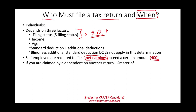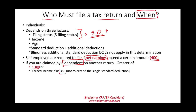What happens if you are a dependent on another return? If you file a tax return but you are not independent — somebody already claimed you — but you still have to file, what is your standard deduction? The standard deduction will be the greater of $1,100 or your earned income plus $350, not to exceed the single standard deduction. Why would you file if you are already a dependent? You would file because you want to get a refund, or you might have to file because you have unearned income. So you have to file even if you are a dependent.